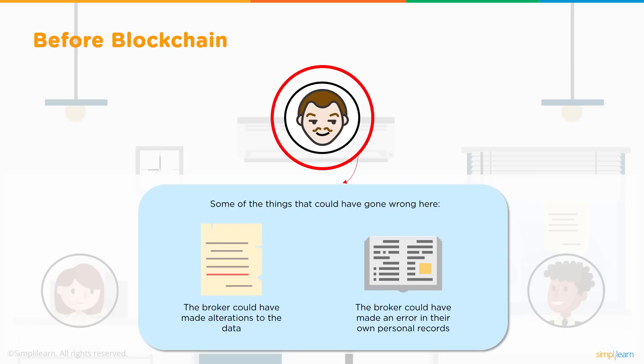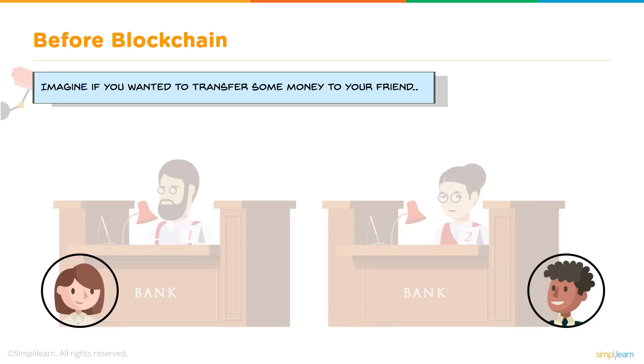In the due course, some things can go wrong. The broker can make alterations to the data, or by mistake make errors in his own personal records or the records of the buyer and the seller. Considering it's a very sensitive and high value transaction, if any problem comes into picture, then both the buyer and seller can suffer huge losses.